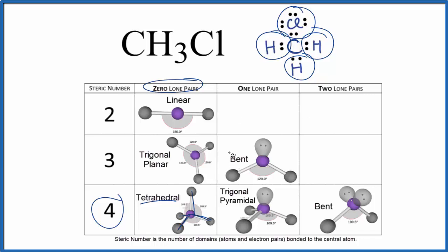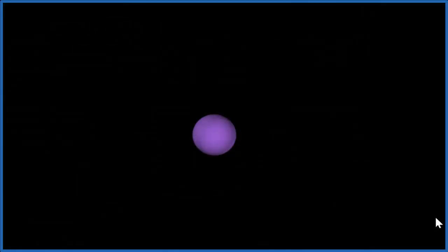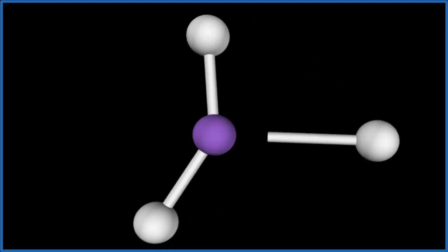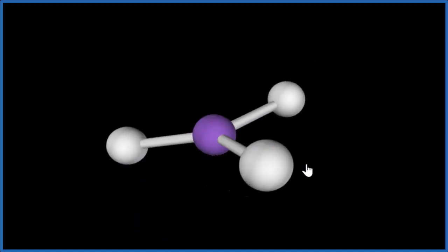Let's look at this in three dimensions. So the central atom, that'll be the carbon. Then we're going to put three hydrogen atoms on, one, two, three. You see how they spread out to be as far away as they can from each other.